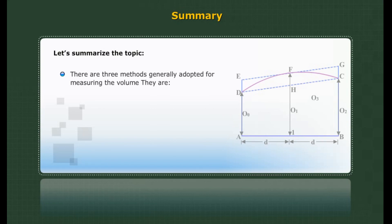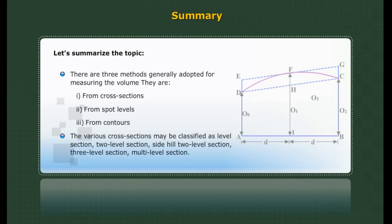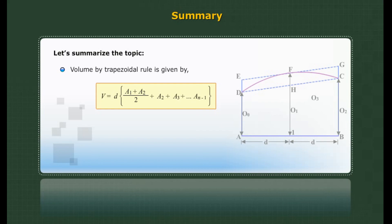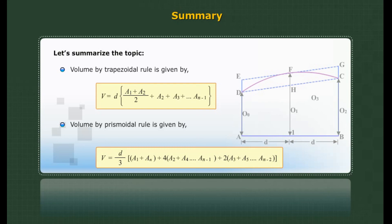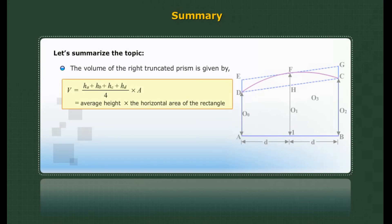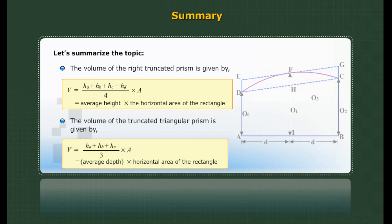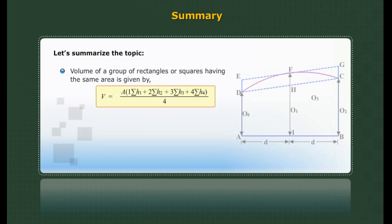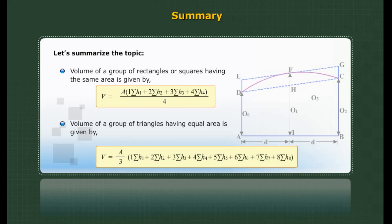Summary: There are three methods generally adopted for measuring the volume: 1. From cross sections, 2. From spot levels, 3. From contours. The various cross sections may be classified as level section, two-level section, side-hill two-level section, three-level section, and multi-level section. Volume by trapezoidal rule and by prismoidal rule are given by standard formulae. The volume of the right truncated prism, the truncated triangular prism, a group of rectangles or squares of the same area, and a group of triangles having equal area are each given by their respective formulae.